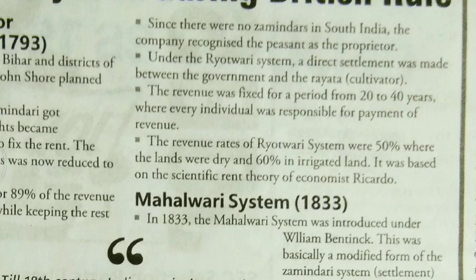Every individual was responsible for payment of revenue. The revenue rates under the Ryotwari system were 50% where the lands were dry and 60% on irrigated land. It was based on the scientific rent theory of economist Ricardo.